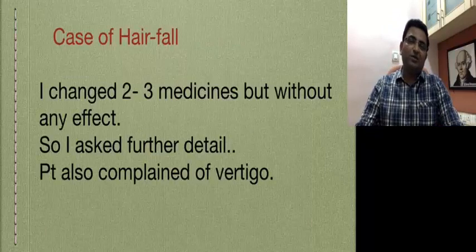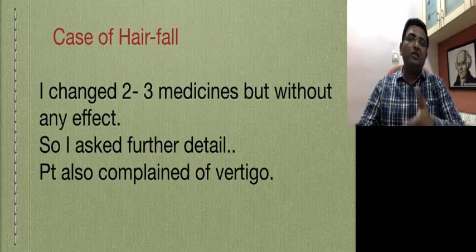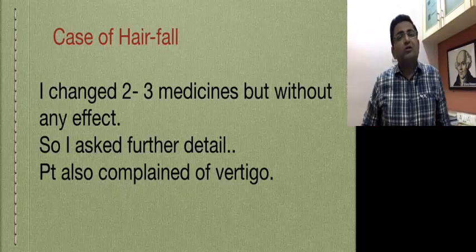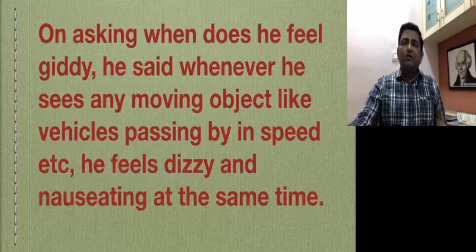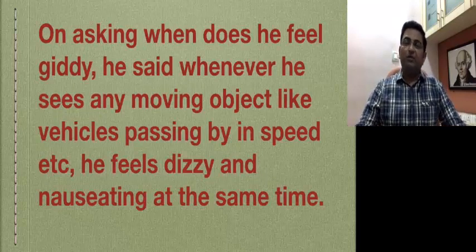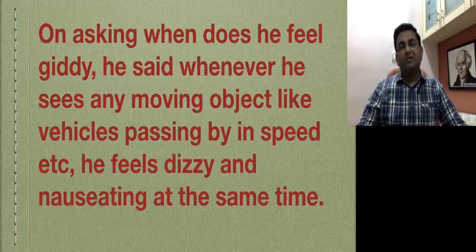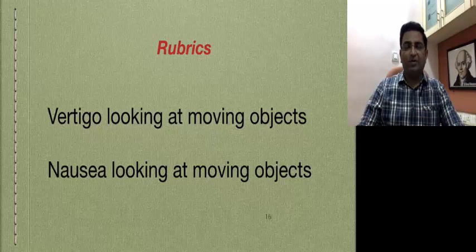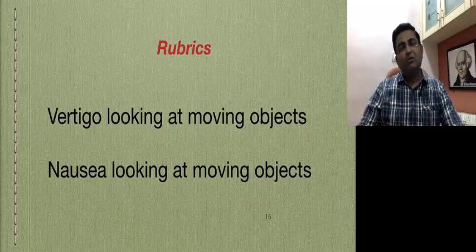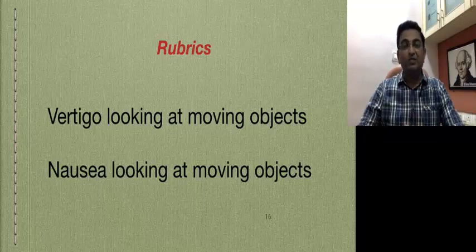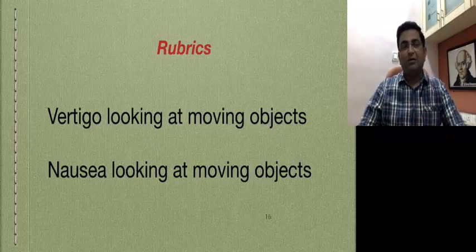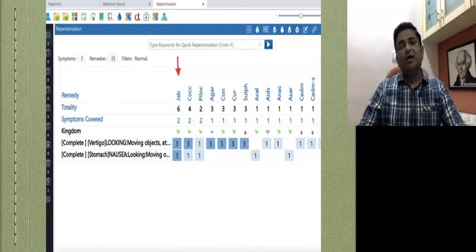I had a very interesting case of hair fall. I changed 2 to 3 medicines but without any effect. So I asked for further detail and the patient also complained of vertigo. On asking when he feels giddy, he said whenever he sees any moving object like vehicles passing by at speed, he feels dizzy and nauseated at the same time. These symptoms were something uncommon for me. So I searched in the repertory and I got 2 rubrics: Vertigo — by looking at moving objects, and Nausea — by looking at moving objects. When I repertorized these 2 rubrics, very interestingly, the medicines that came up were Jaborandi, Cocculus, and Pilocarpus.